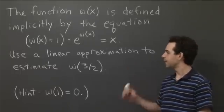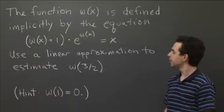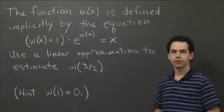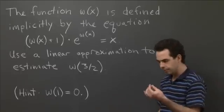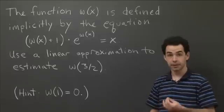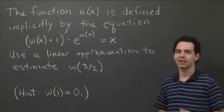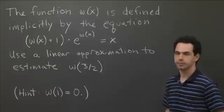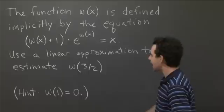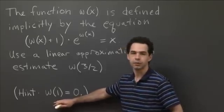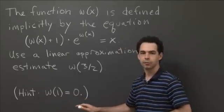Welcome back. Hopefully you've had a chance to work on this. In order to do this linear approximation, we need to know a base point and we need to know the derivative of the function at that base point — those are the two pieces of data needed to construct a linear approximation. We have a good candidate for a base point: the point (1, 0), since the curve passes through it.